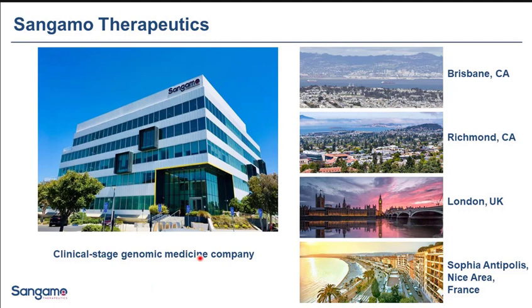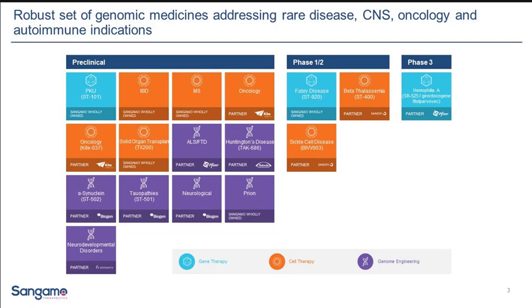Sangamo Therapeutics is a clinical stage genomic medicine company. We have four different sites, two in the U.S. and two in Europe. In the U.S., we are on either side of the Bay Area, and our group and technical operations along with GMP facilities are in the Brisbane site. Sangamo has a wide variety of clinical and non-clinical candidates, some wholly owned and some in partnership with companies such as Sanofi, Pfizer, and Biogen. We have a few candidates in Phase 1-2, as well as one candidate in partnership with Pfizer in Phase 3 for Haemophilia A. We work on gene therapy, cell therapy, and genome engineering using viral vectors.